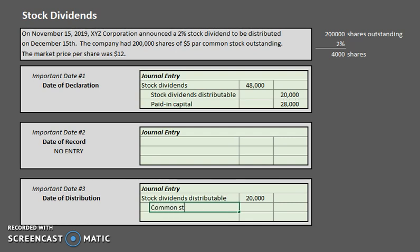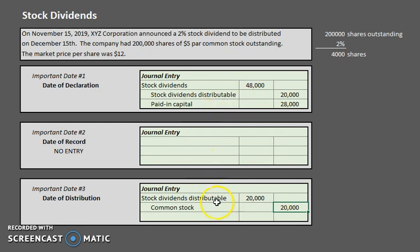Stock dividends distributable is always valued at par, and common stock is also always valued at par — so the flow of information works seamlessly. We recorded market price for the stock dividend debit, stock dividends distributable at par, and that par value converts directly into common stock. That's all there is to stock dividends. Remember to calculate the number of shares first, then work through the journal entries. Keep practicing and happy studying — thank you for watching, please subscribe.